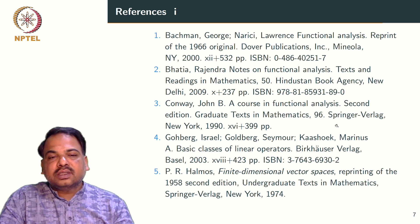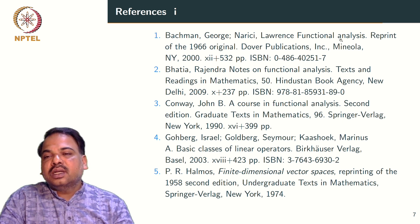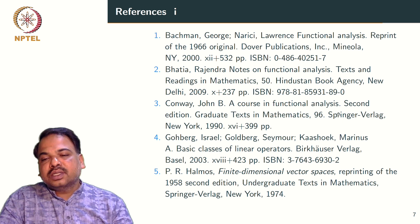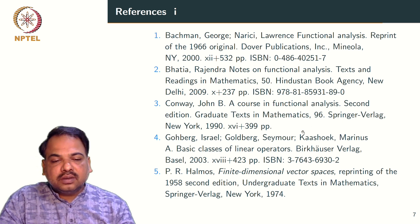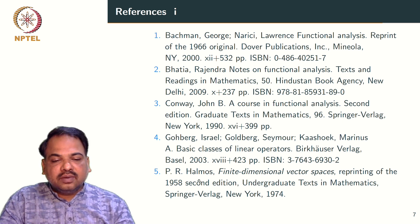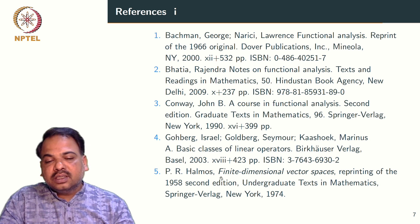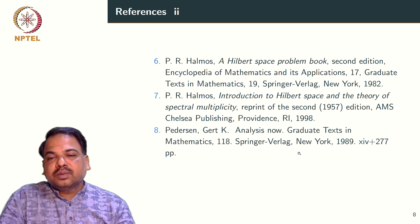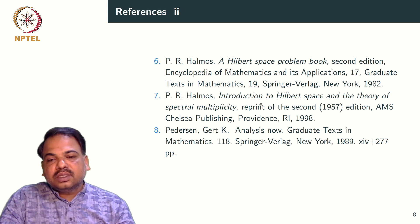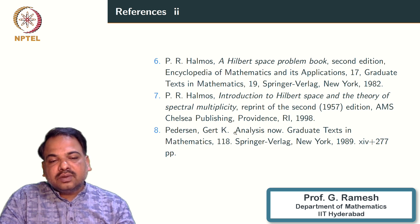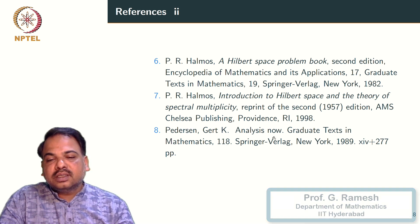These are a few important references. The first one is Bachman and Narici, title is Functional Analysis. Second one is Rajendra Bhatia, Notes on Functional Analysis. Third one is book by J.B. Conway, A Course on Functional Analysis. And fourth one is Gohberg, Goldberg and Kaashoek, title is Basic Classes of Linear Operators. And the fifth one is by P. R. Halmos, the title is Finite Dimensional Vector Spaces. And sixth one is Hilbert Space Problem Book by P. R. Halmos. And the next one is Introduction to Hilbert Space and the Theory of Spectral Multiplicity by P. R. Halmos. And the last one is book by Pedersen, the title is Analysis Now.